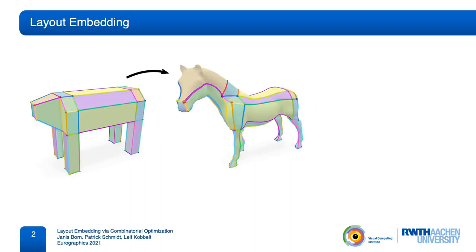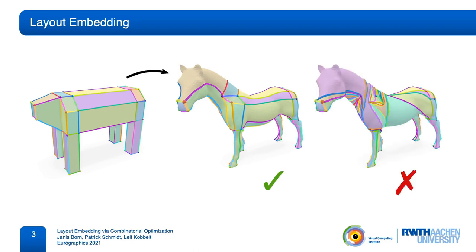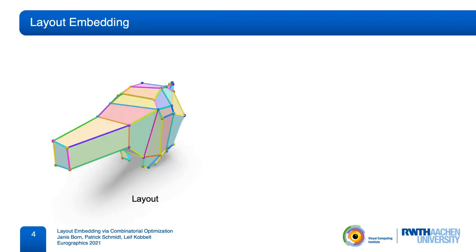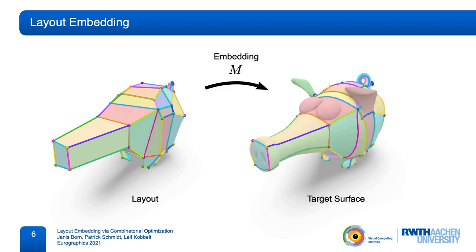We present a new method to embed a layout into a target surface while avoiding the typical topological artifacts that can occur with previous methods. A layout is an abstract cell complex. Here we show it as a coarse polygon mesh, but by itself it carries no geometric information. Geometry comes in the form of a target surface, for example a triangle mesh. A layout embedding is then a map that embeds the layout injectively into the target surface. And this operation is found in many geometry processing applications.